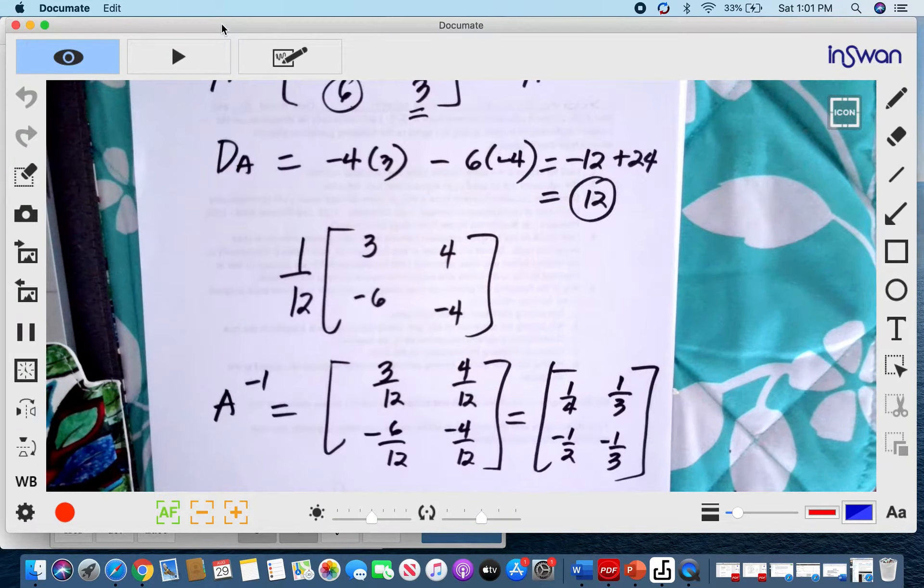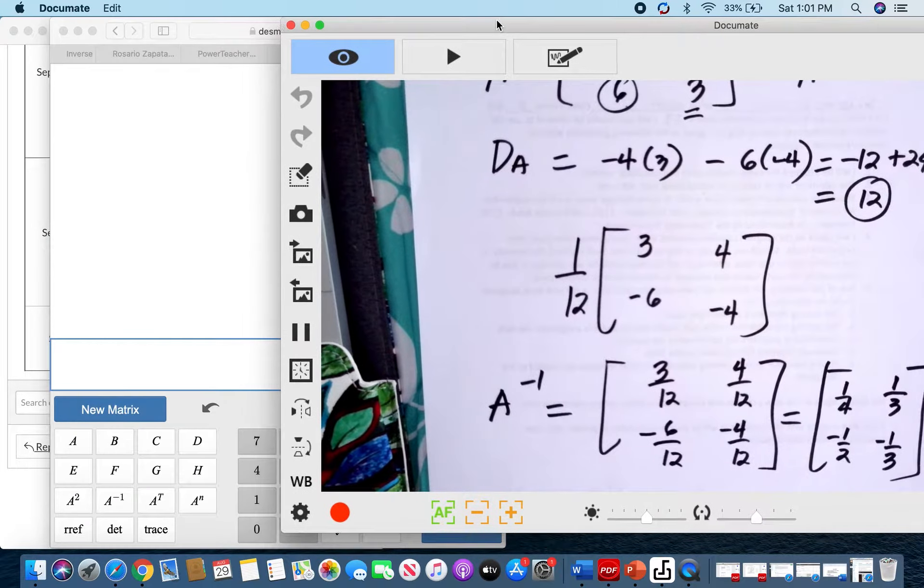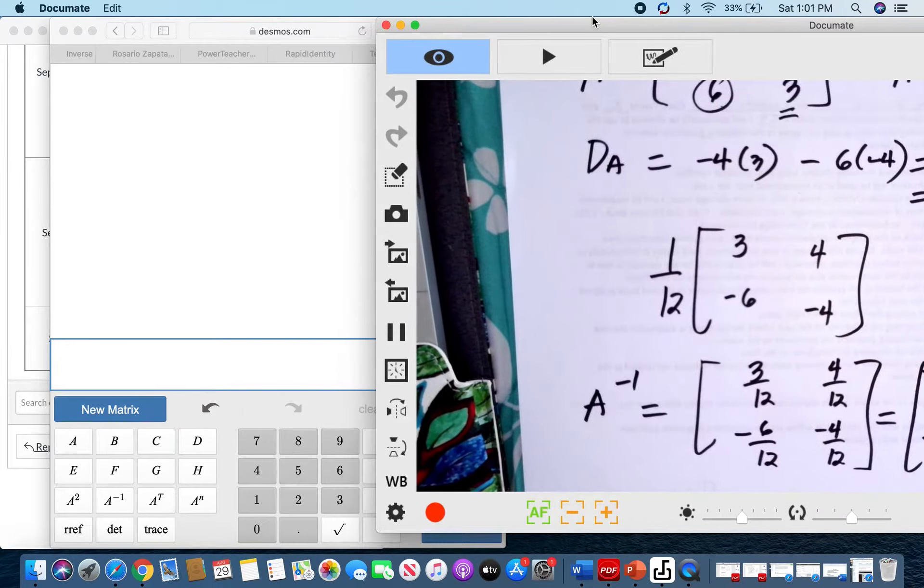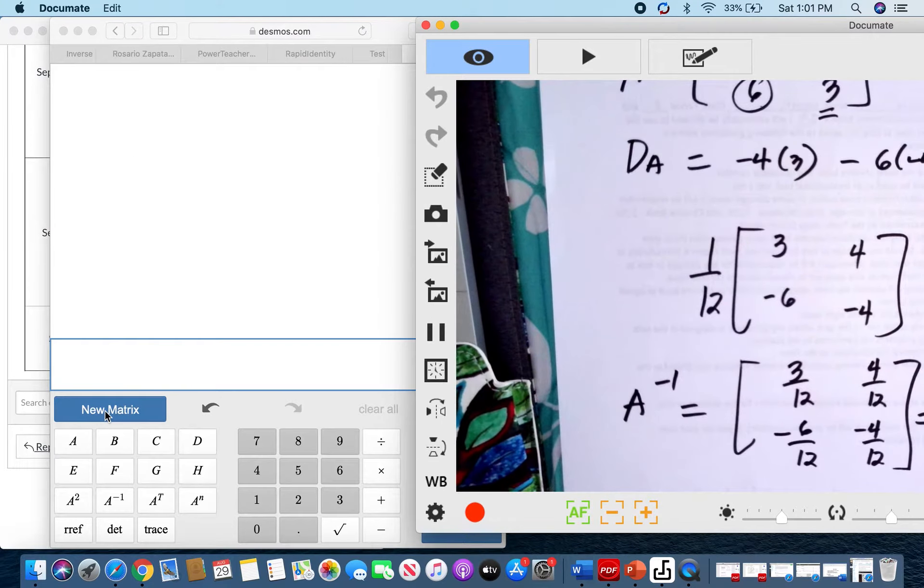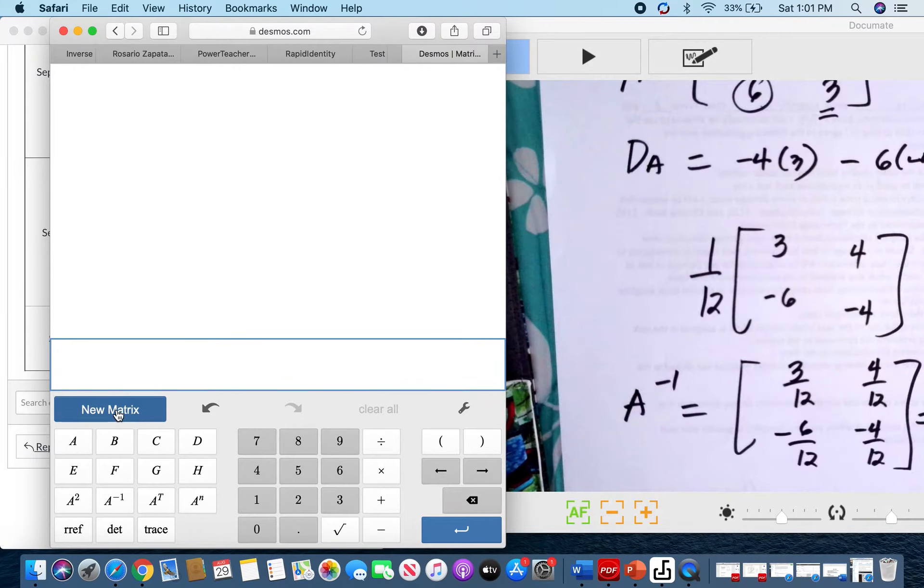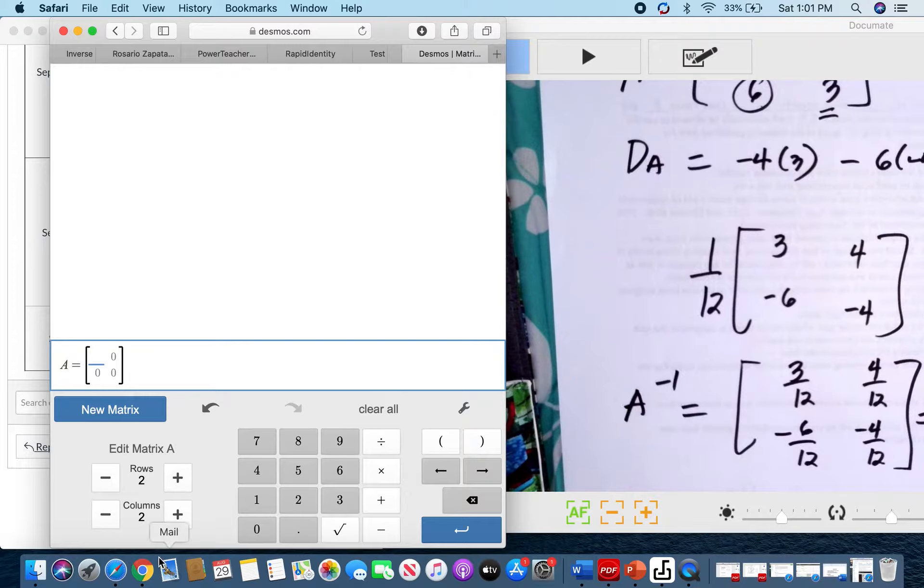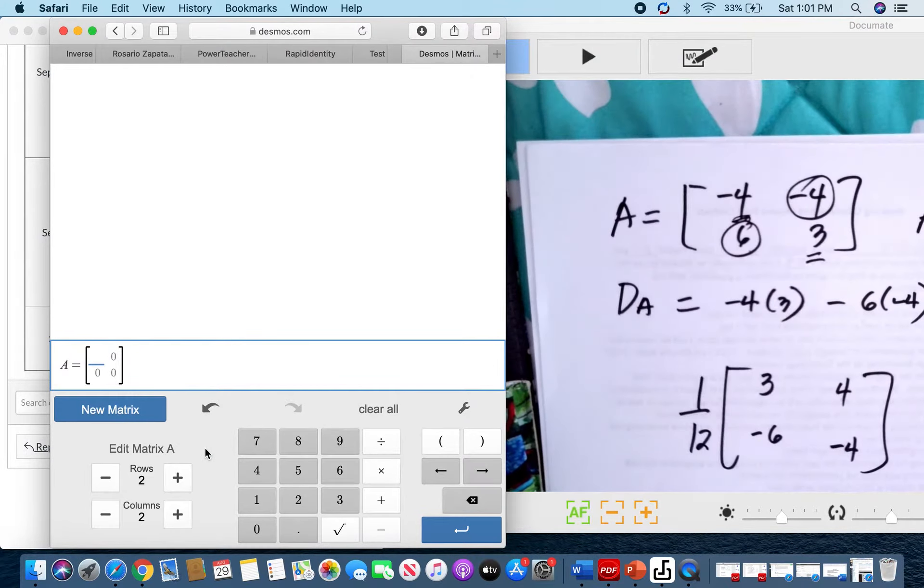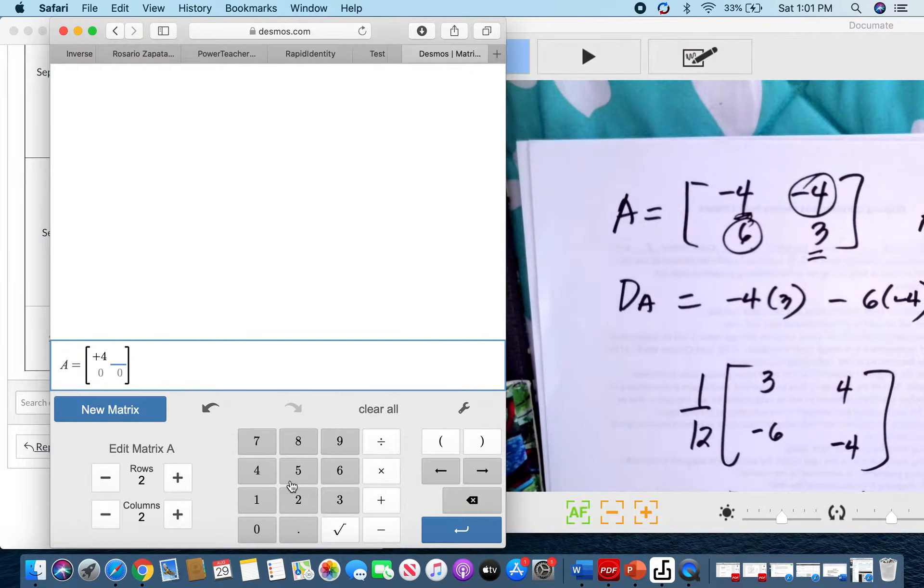Now we will verify our answer using our matrix calculator. So input first our element. We have a 2 by 2 matrix. So our elements will be -4, and then -4.